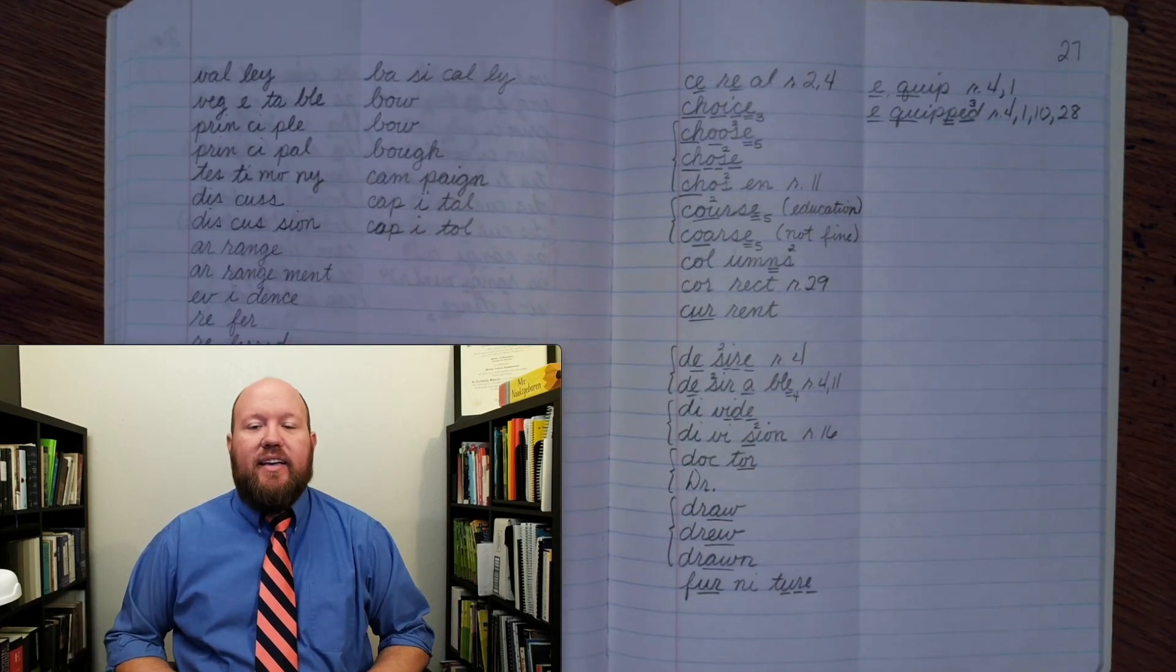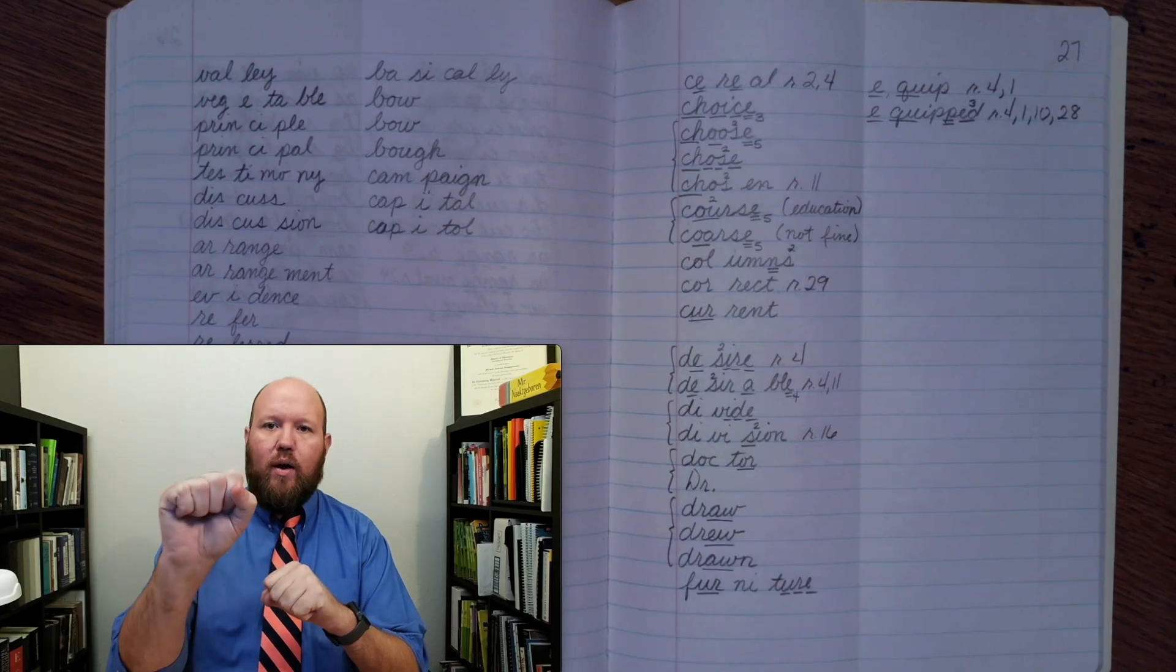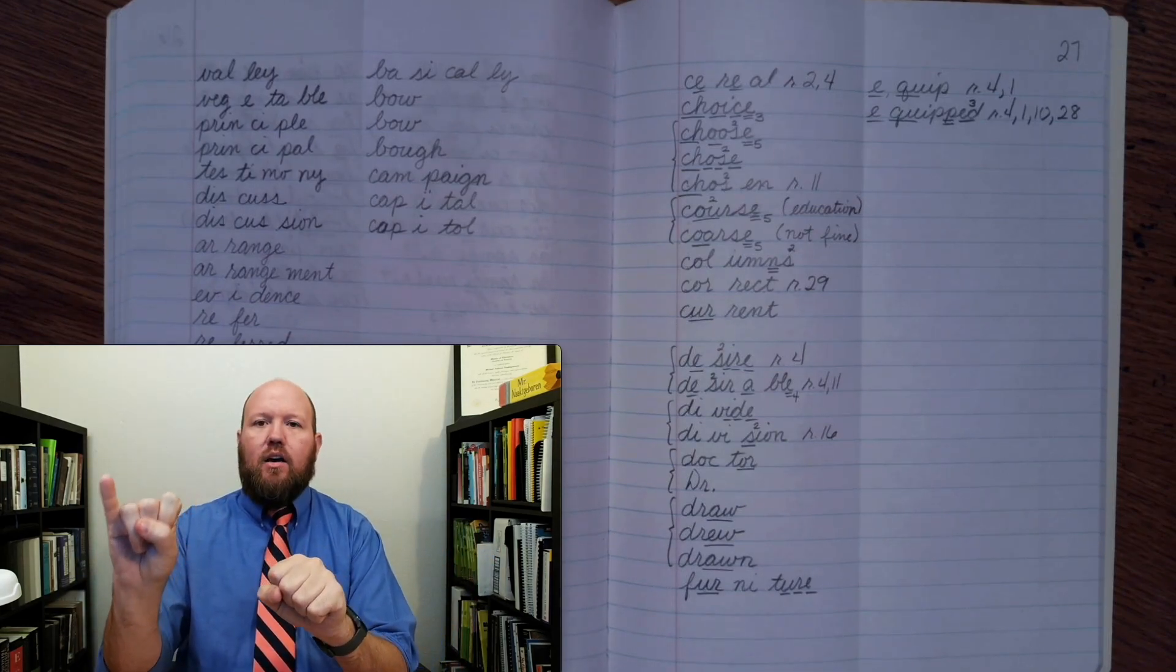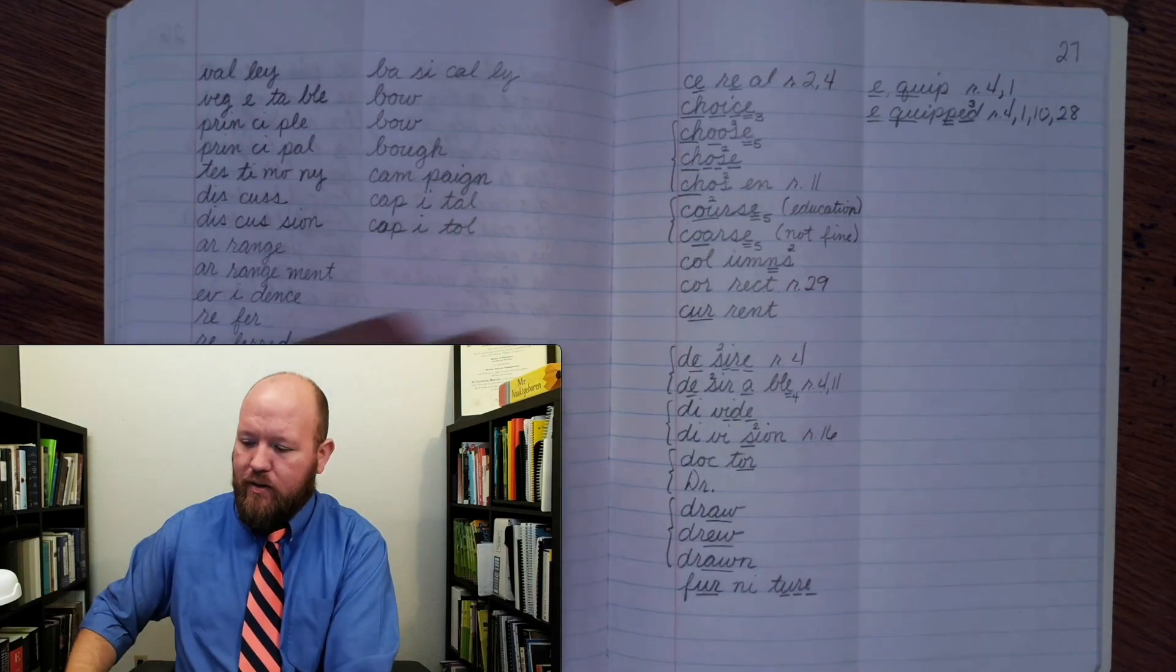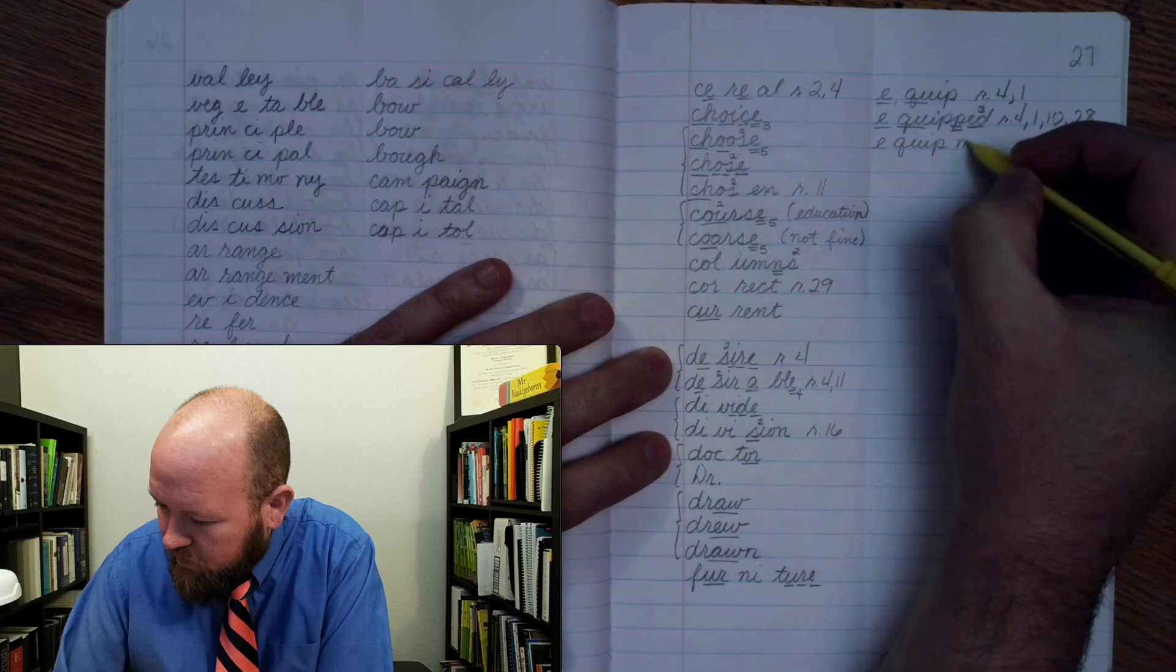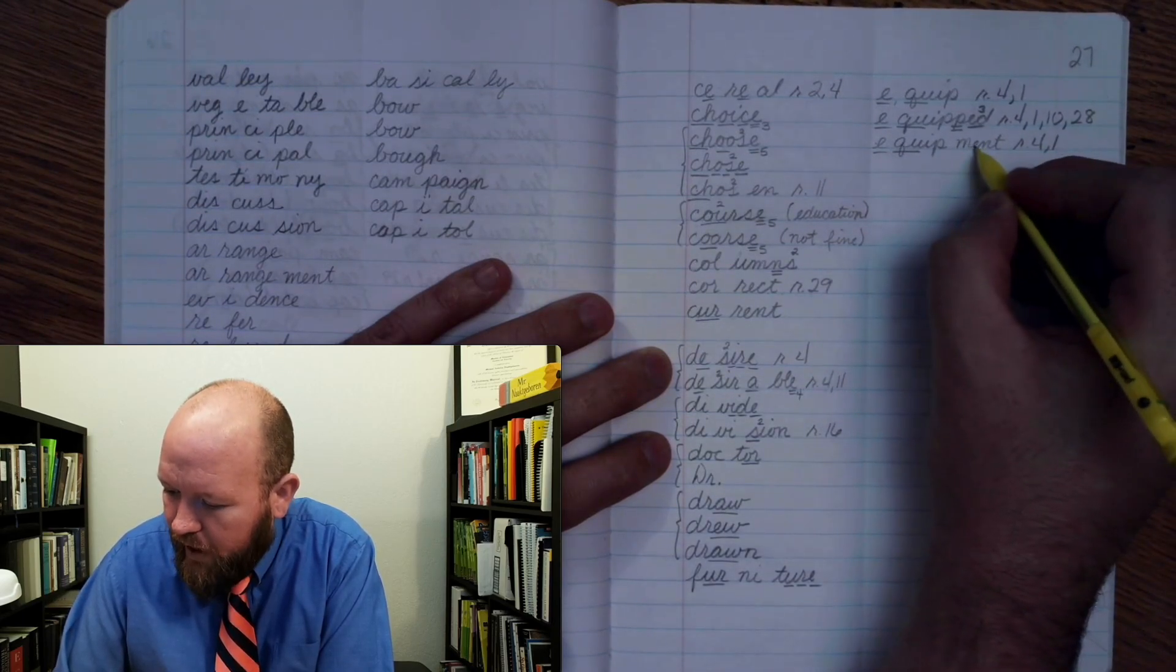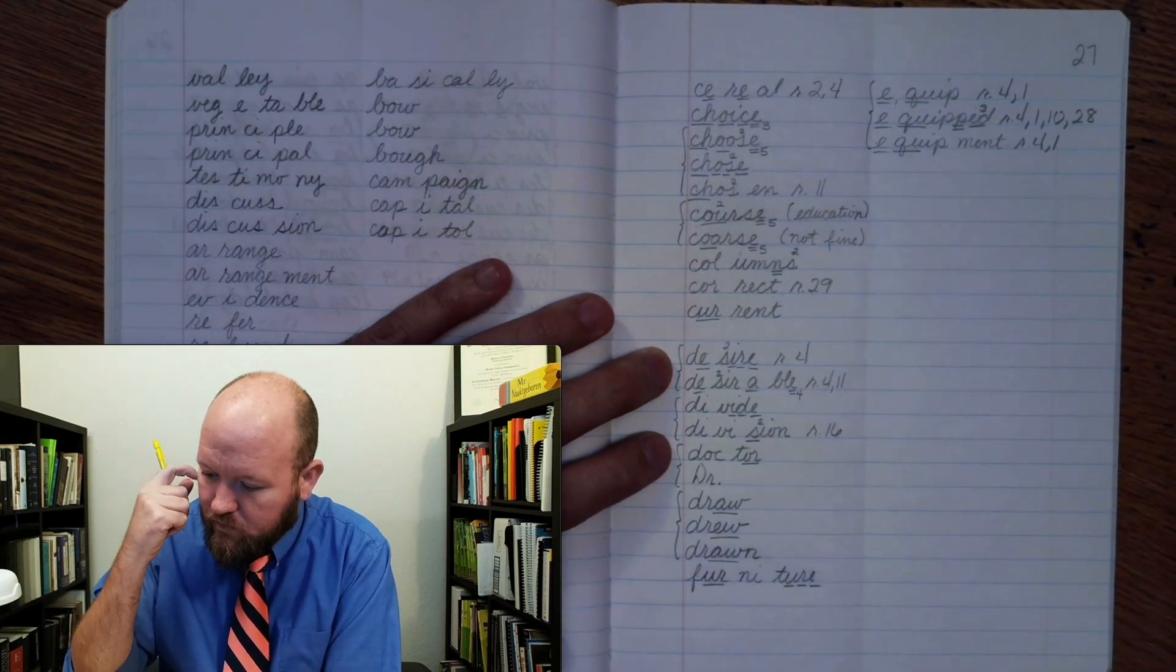The last word in this grouping at least is equipment. So I'm going to put all of the equipment together. Equipment, base word equip, ending M E N T. I write equip, add M E N T to make the word equipment. E-quip-ment. E once, rule four. Q U once, rule one. I P M E N T. Equipment. Brace those.